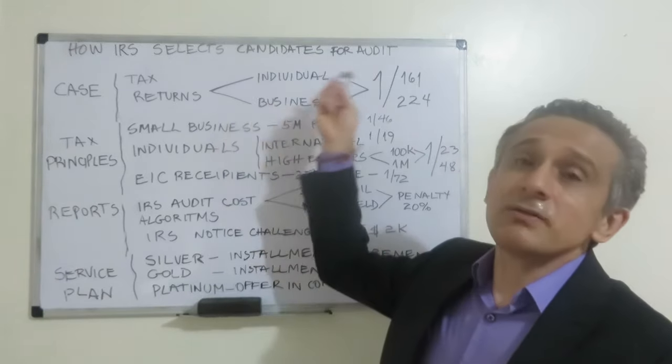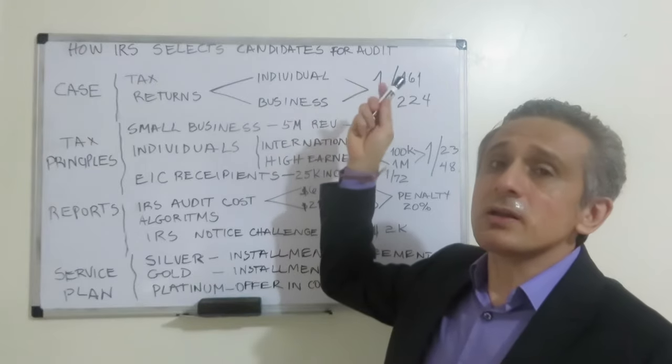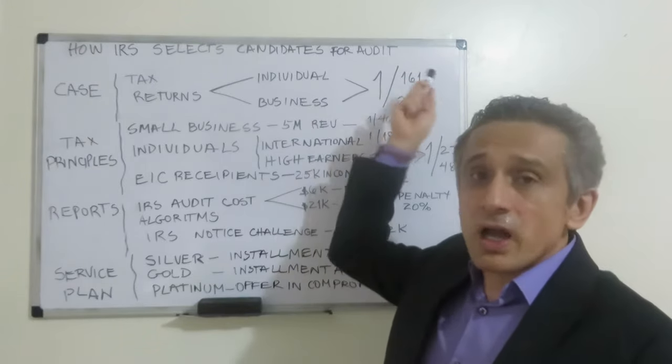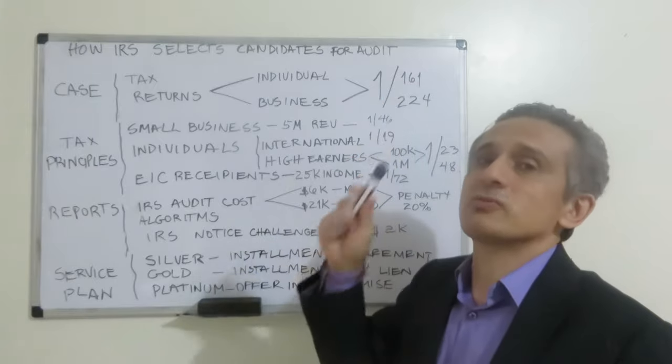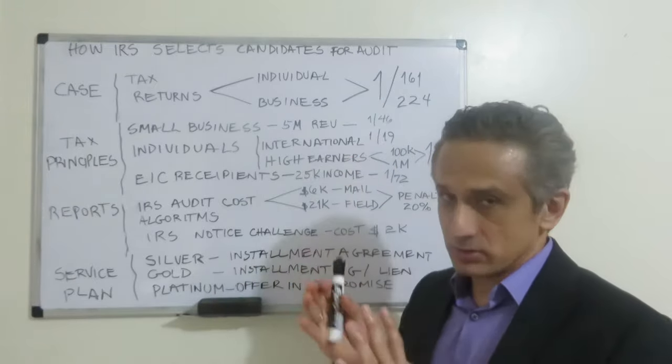How does the IRS audit in terms of numbers? For individuals, for every 161 returns, one individual will be audited. This is in general.